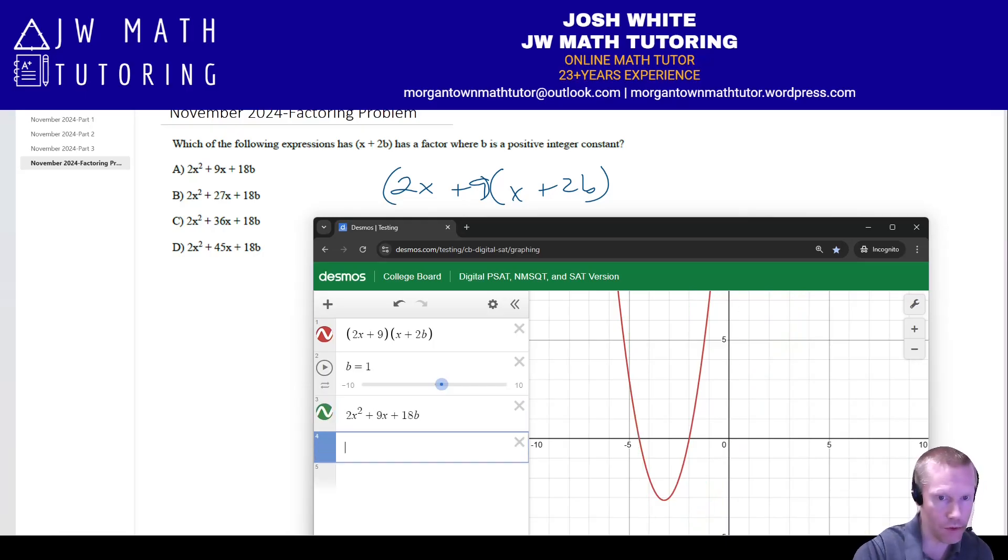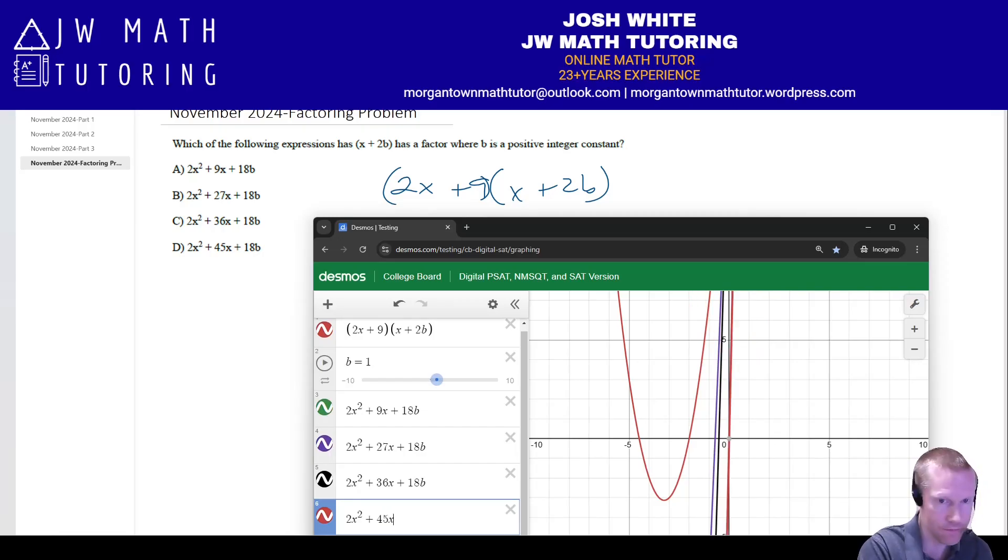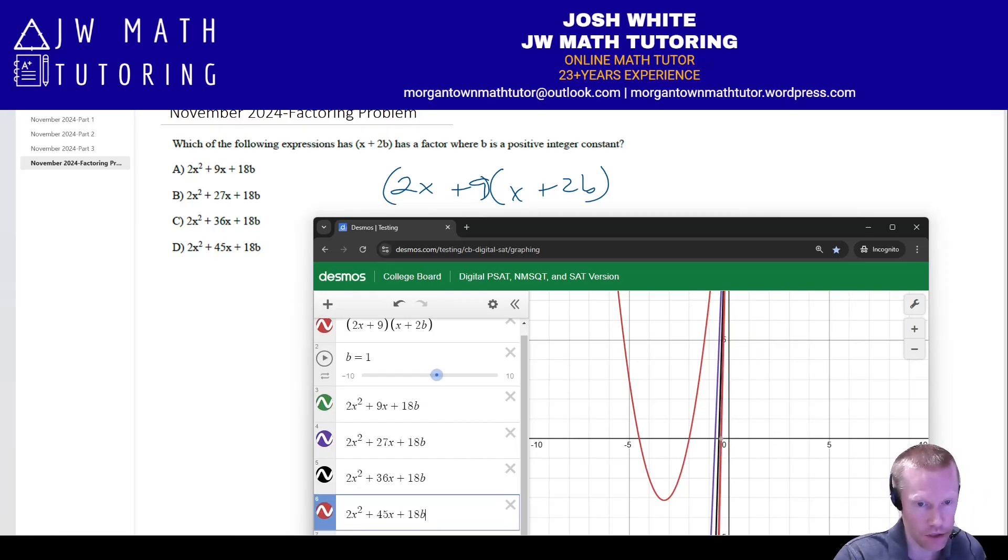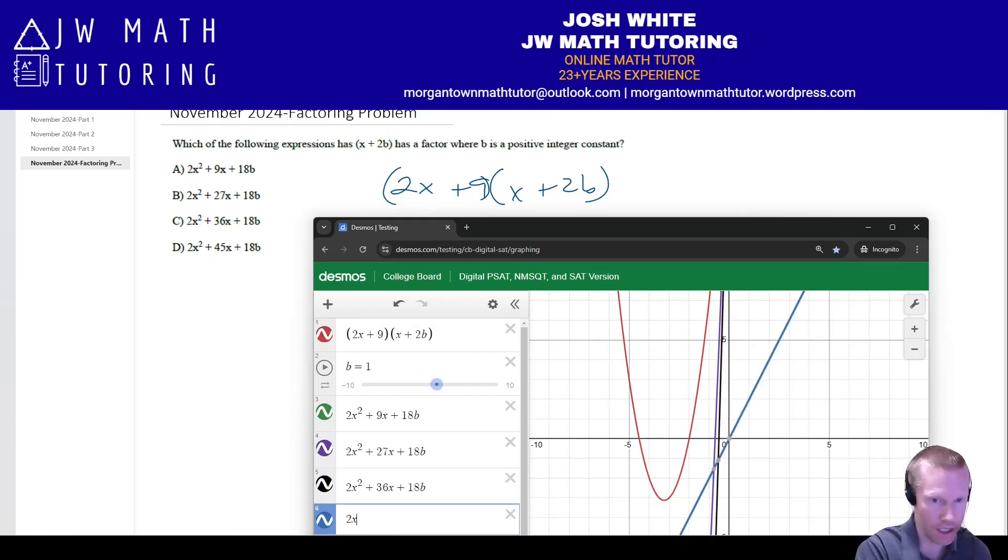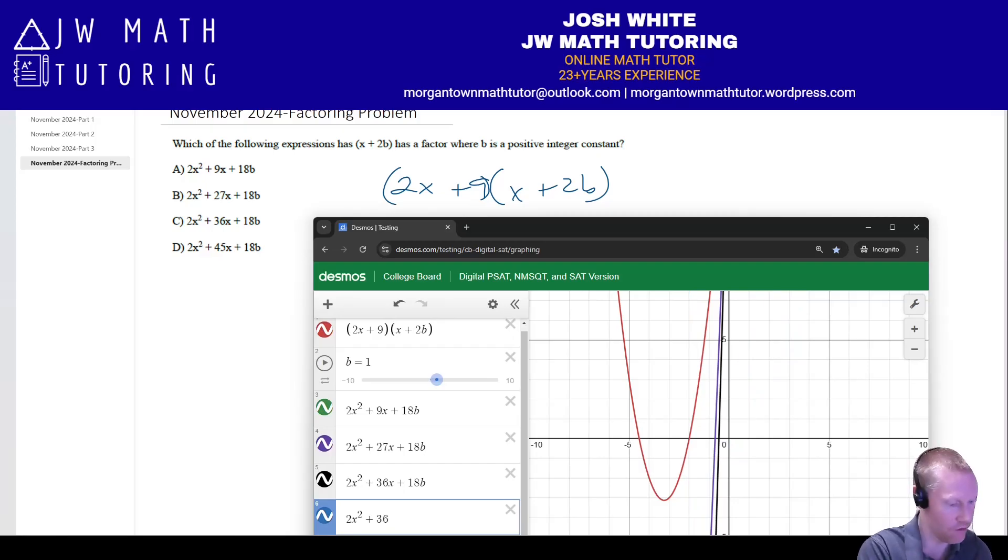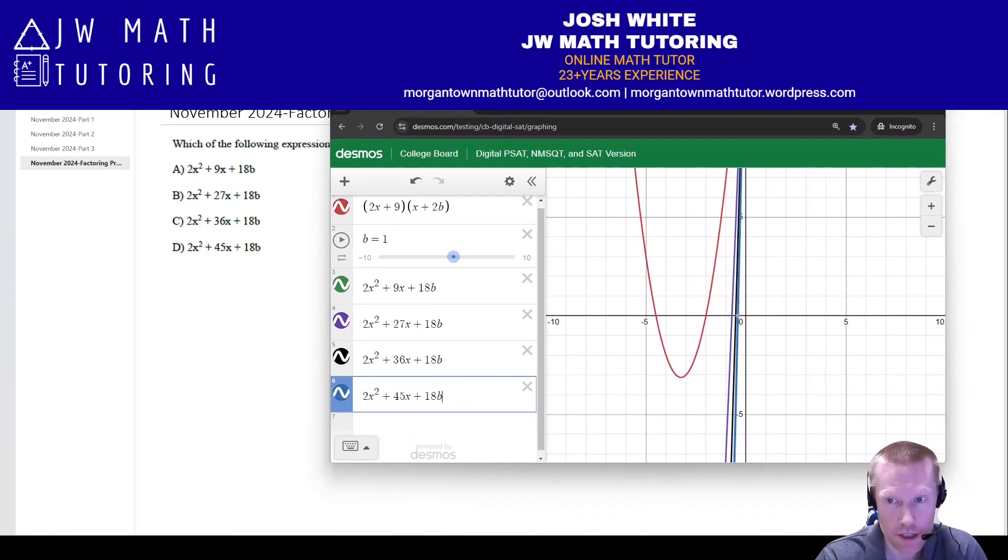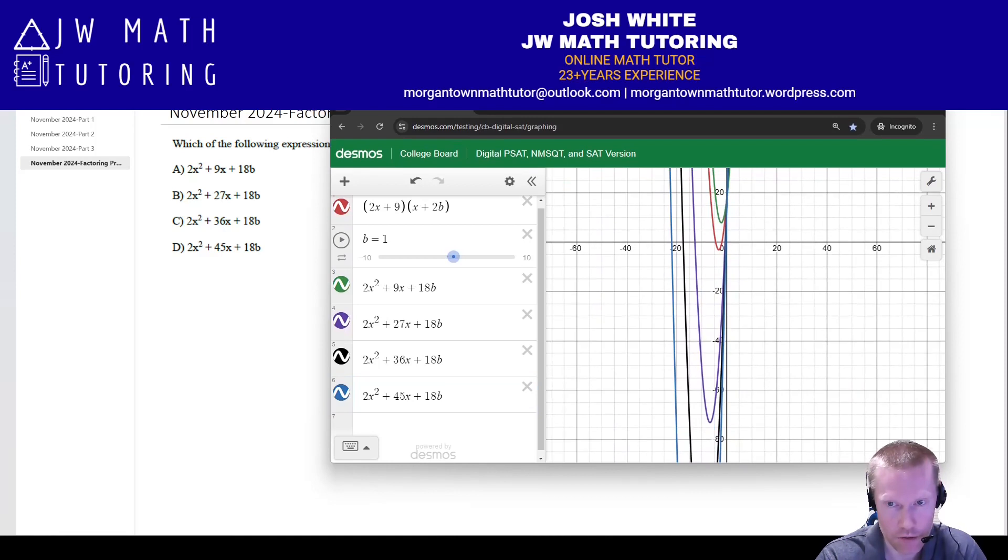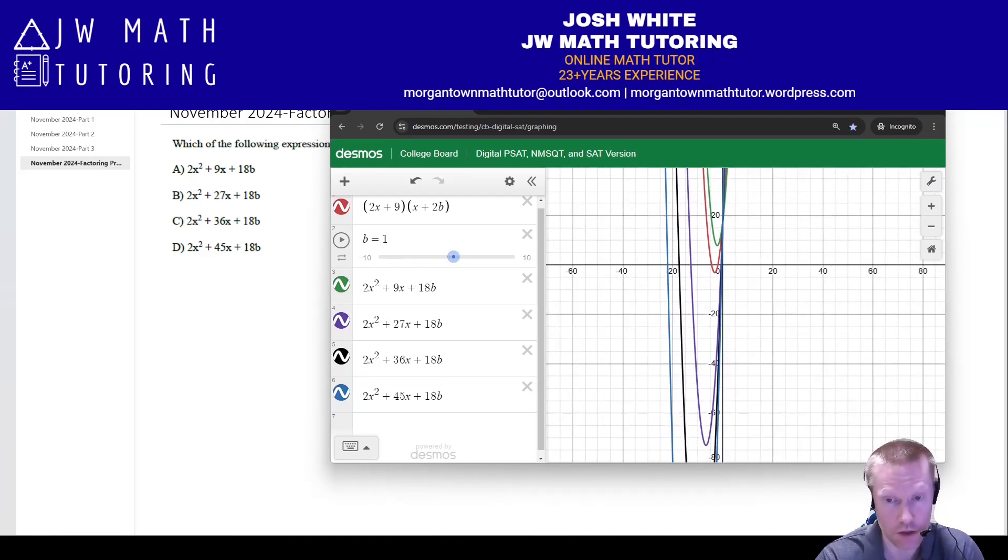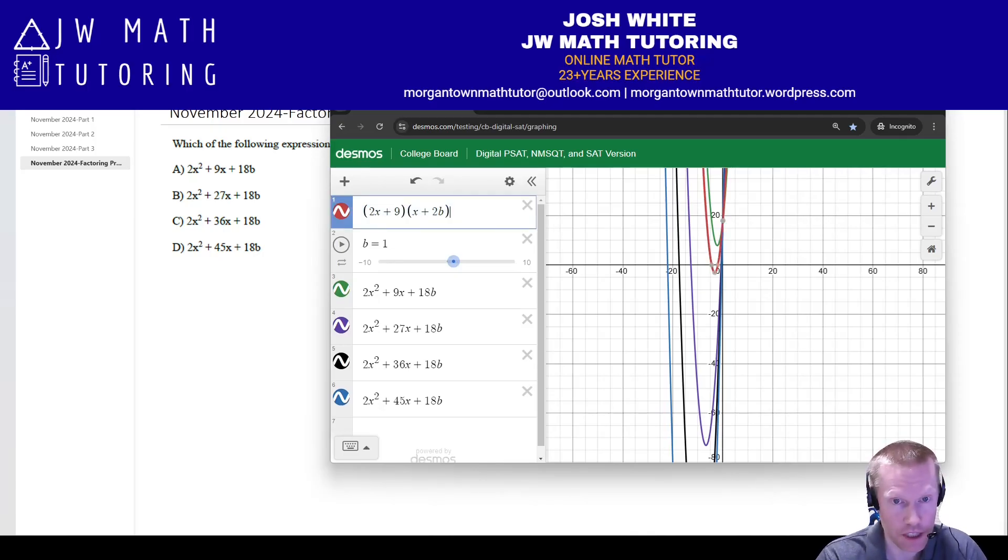And essentially what I'm going to do is I'm going to move the slider and see which eventually I will get to a b value where one of the graphs overlaps. Now, this one I'm actually going to delete it and just do it again so I get a different color, so that way I have four different colors for the answer choices. So now, again, I have graphed the original problem if you zoom out here, you can see a better picture. I've graphed the original problem and I have graphed all four answer choices. You can see that there are five distinct graphs. What we're looking for is when the red one, which is the original factored form here, overlaps one of these other four colors—green, purple, black, or blue.